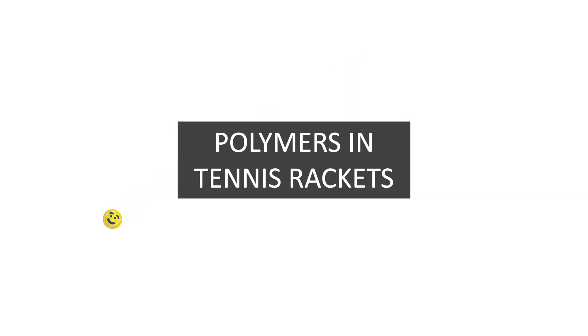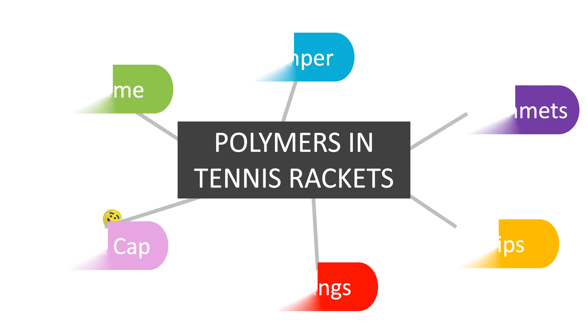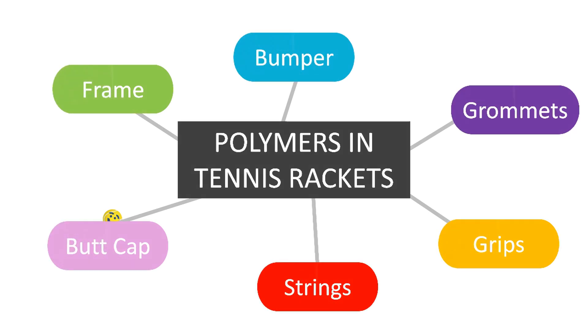After that brief introduction to what polymers are and how they can be formed, we can now look at how they are incorporated into tennis rackets. Polymers can be found in all areas of the racket, including the frame, bumper guards, grips, strings, grommets, and the butt cap.